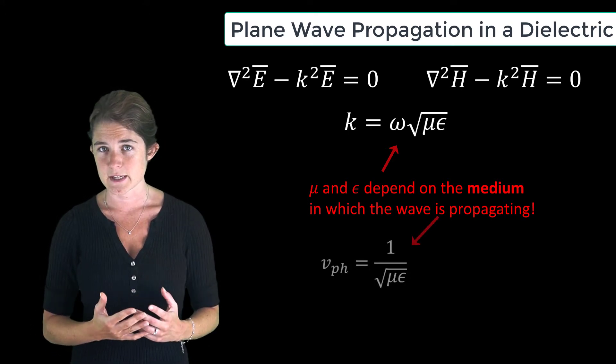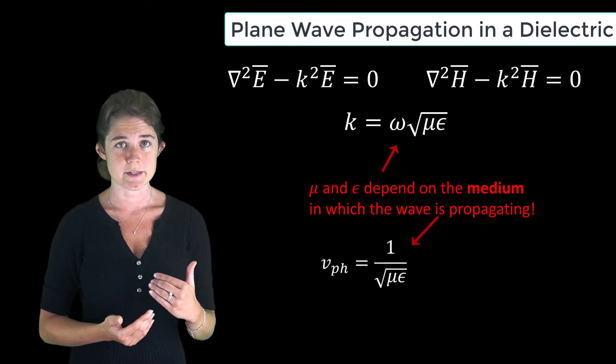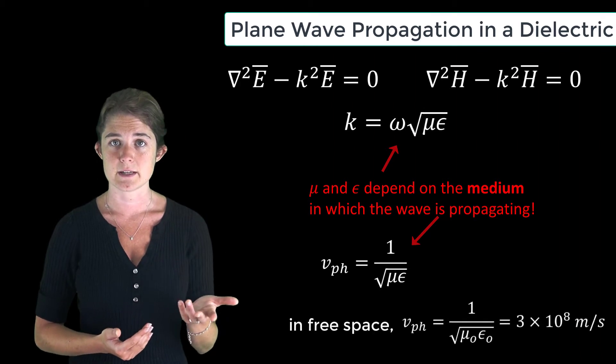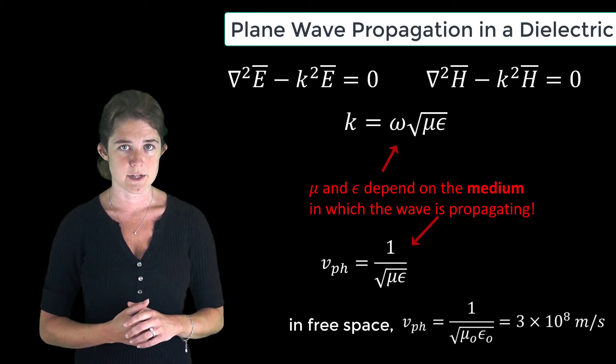This is where we got that the phase velocity of a wave is 1 over the square root of mu epsilon, and showed that the phase velocity in free space is 3 times 10 to the 8th meters per second.